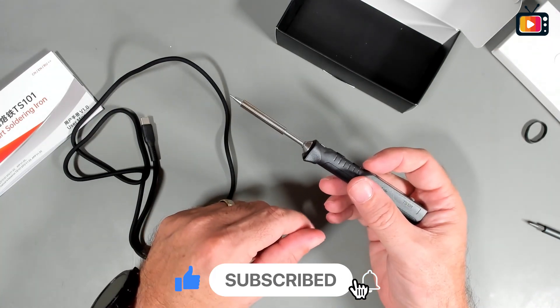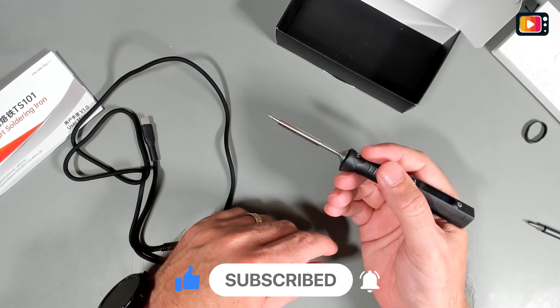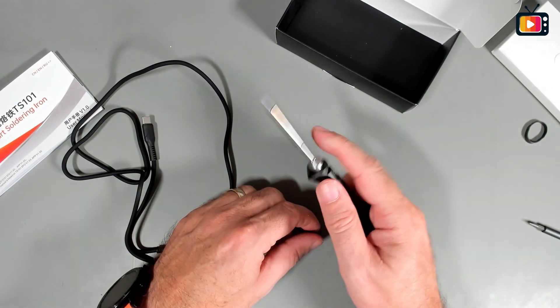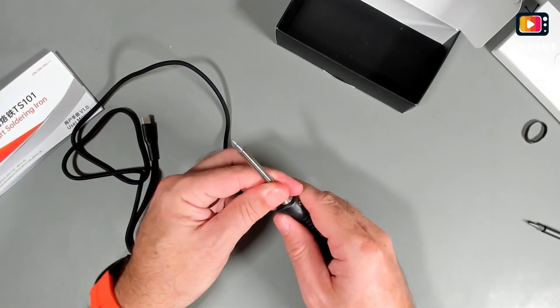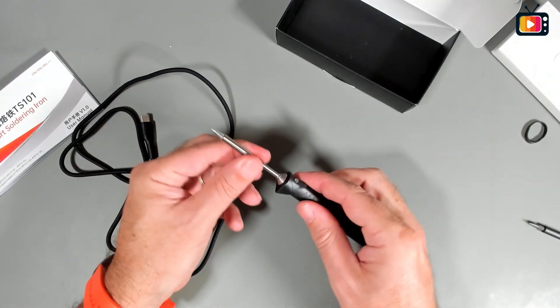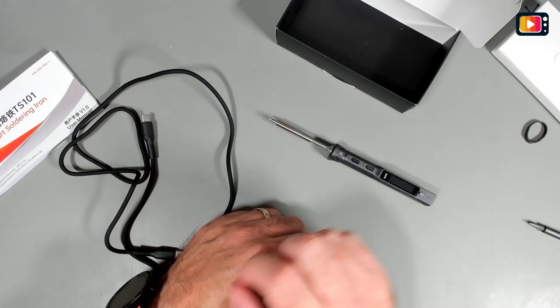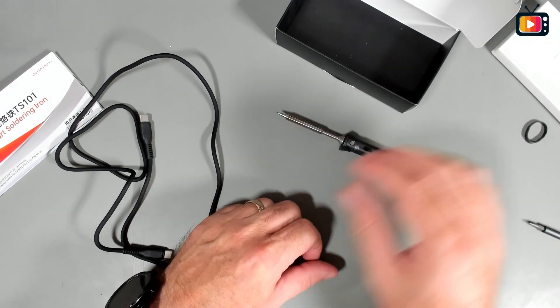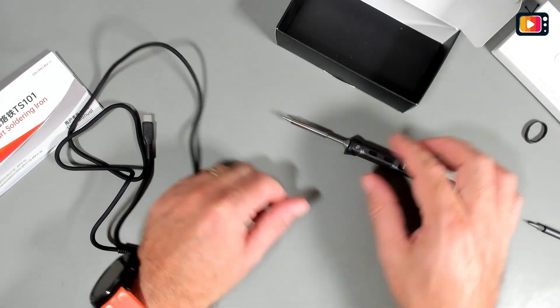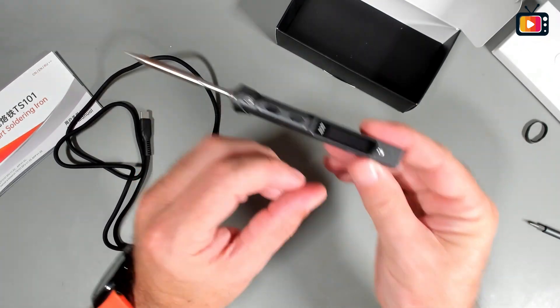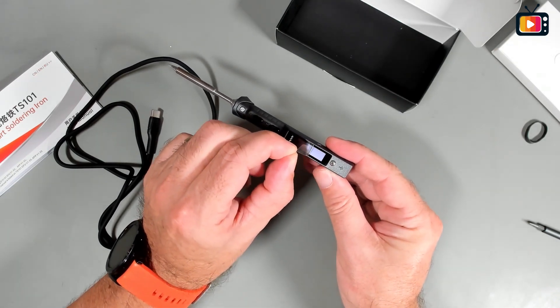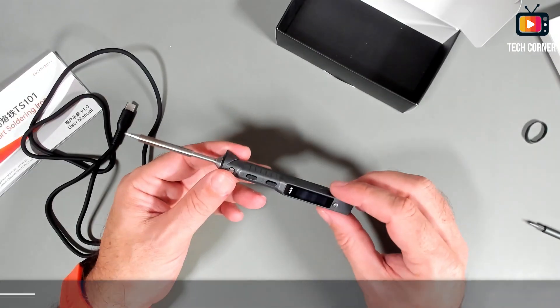And this anti-slip piece has three functions. The first one is not allowing your finger to slip to the hot part. The second one is to help you to take off the tip. What they say is that you do it like this and take the tip off. And the third one is that this right now is a holder, it's a stand. You can put the soldering iron on the table. That will not touch the table and it will be in a stable position. Yeah, it seems a nice improvement. So right now I'm going to peel the protection like this. Oh baby, you are mine now. And let's start testing this.